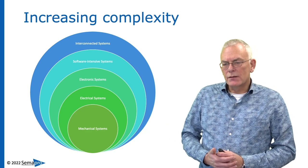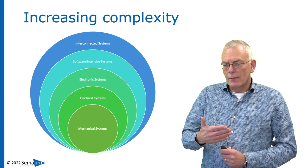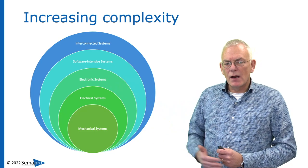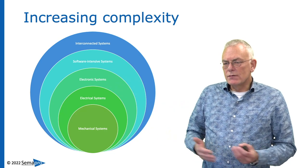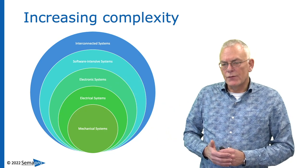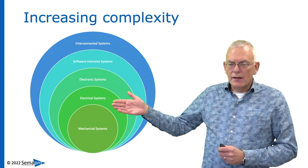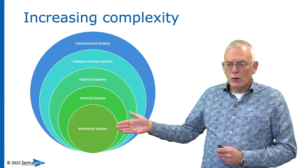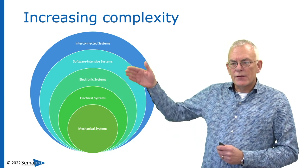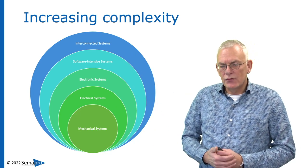Now technical complexity, I mentioned earlier, is probably most people know this diagram and it shows the technical evolution of systems. It started out with mechanical systems, then electrical systems were introduced, so you have a combination of these two, and so on, up to the point where we have interconnected systems.